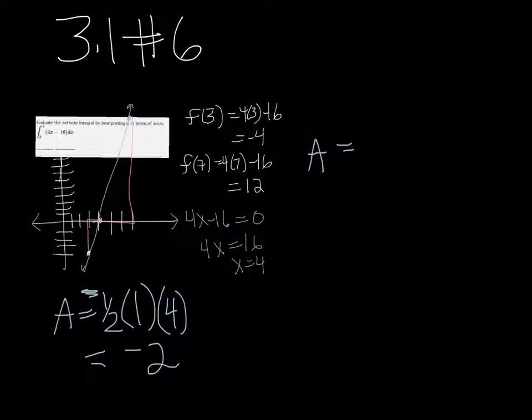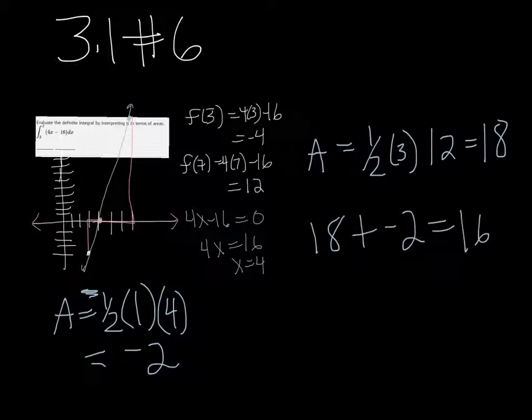The other side, the width of the base of the triangle is 3, so we have half of 3, and then we know that the height is 12, because we already figured that out. So this one has an area of 18. So if we do 18 plus negative 2, we get 16 for the total area.